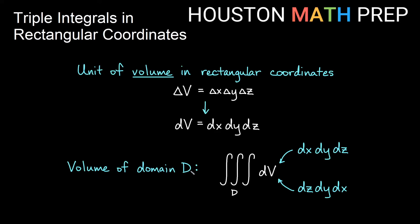You'll notice we say volume of domain D instead of area over region R. When we have a triple integral over some three-dimensional space in R3, we call it a domain D. We'll have a triple integral of dV to find the volume. There are many ways to write dV, but we're going to focus on the order dz dy dx throughout this video, to give you a consistent approach to finding bounds with triple integrals in rectangular coordinates.